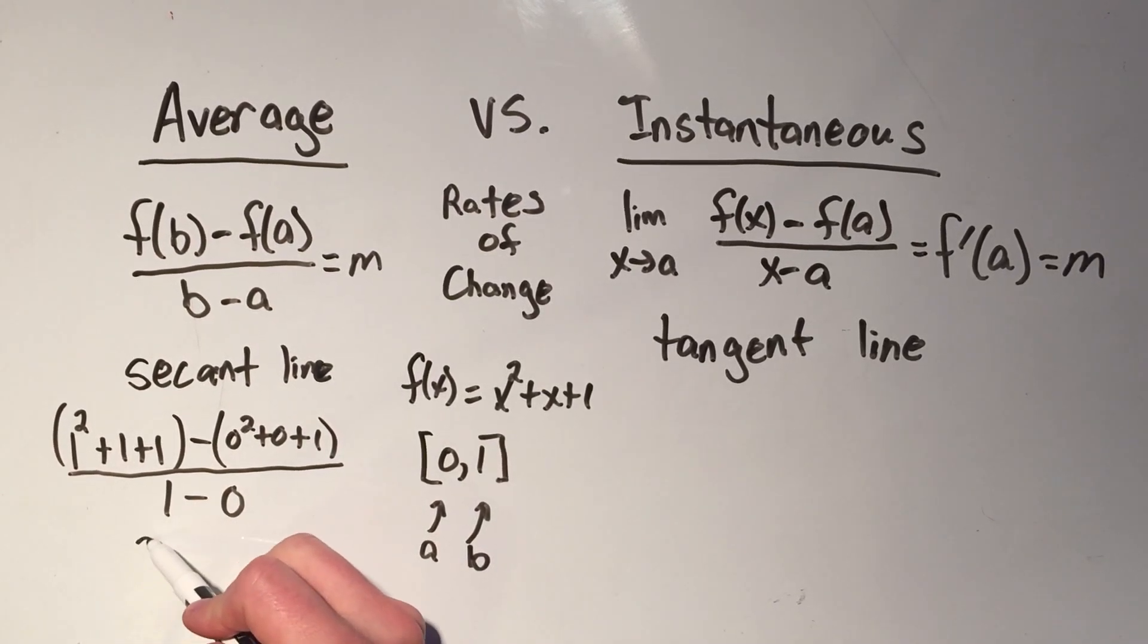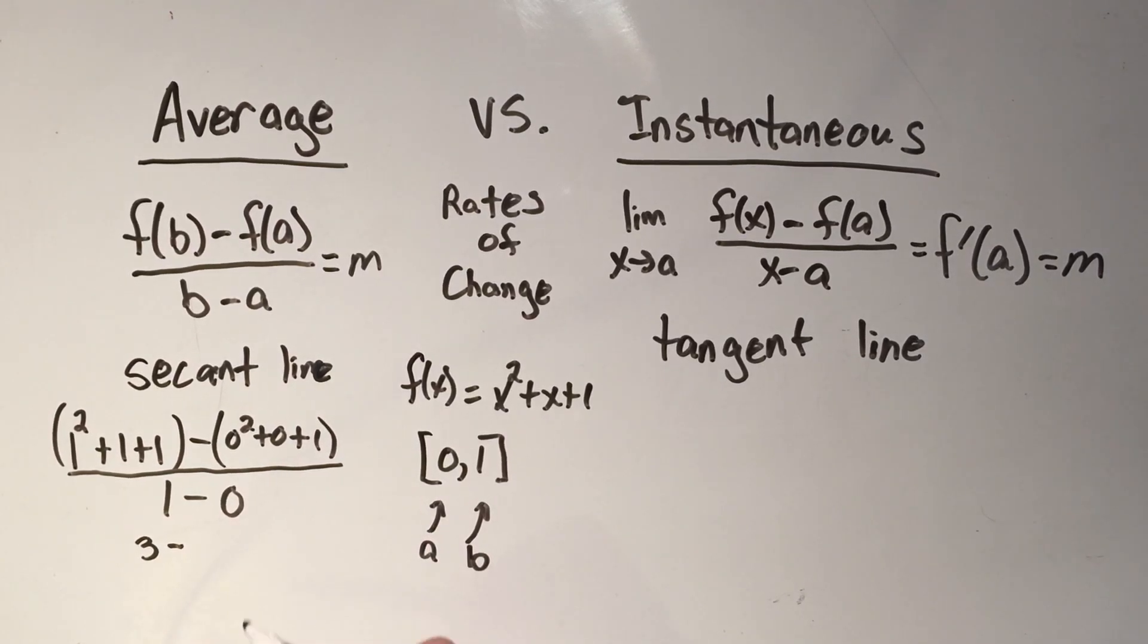So one squared is one, plus one plus one is three, zero squared is zero, plus zero, plus one, so that's minus one.